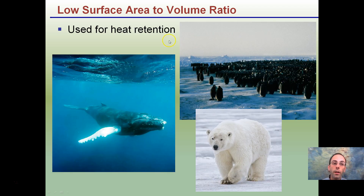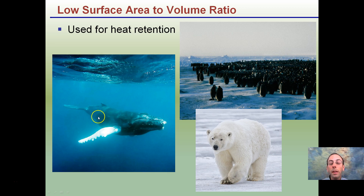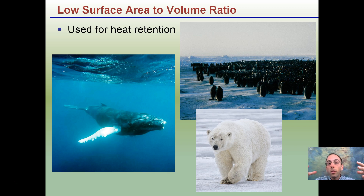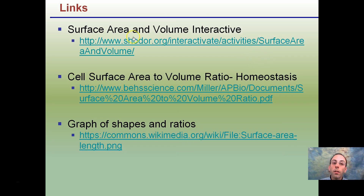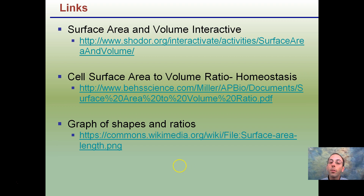In contrast, items with a very low surface area to volume ratio are used for heat retention. Whales have a large, smooth structure with not many folds, limiting surface contact. Polar bears in cold environments, and penguins huddling together, reduce their total exposed surface area to retain heat more efficiently. It all comes back to cells being small to allow diffusion of nutrients, which occurs through a very high surface area to volume ratio.